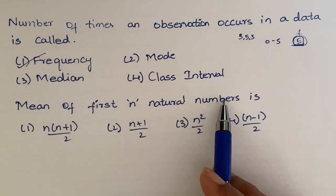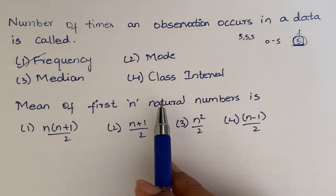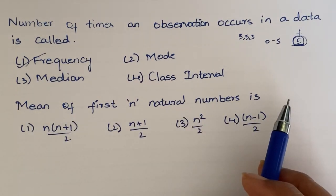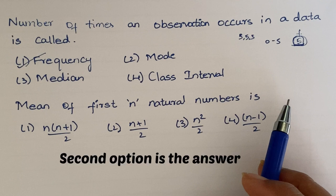Mean of the first n natural numbers is - actually the direct formula. Mean is the sum of n natural numbers by total numbers. So, sum of the first n natural numbers is n into (n+1)/2 divided by total n, which is the answer. We will get (n+1)/2 is the answer.